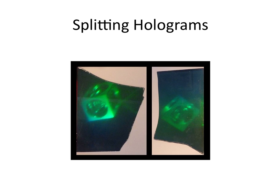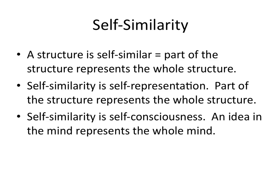Now, since these are still only finitely complex objects, each partial image encoded in the part is encoded at a lower resolution than the whole. So if you keep chopping it up, eventually it'll just get to a kind of noisy blur. Nevertheless, a hologram does encode the structure of the whole in each part — the self-similarity.